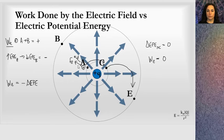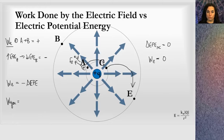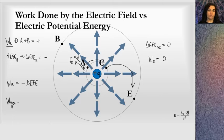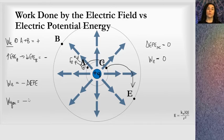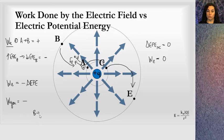One last thing here: you may get a problem asking for the work done by you. If you grab this charge and move it from A to B, you actually don't have to put any effort into moving it — that charge naturally wants to move in that direction. The electric field is doing work, so the work done by you is negative; you actually get work out of the situation. Whereas if you move it from B to A, you have to exert energy, and the work done by you would be positive.